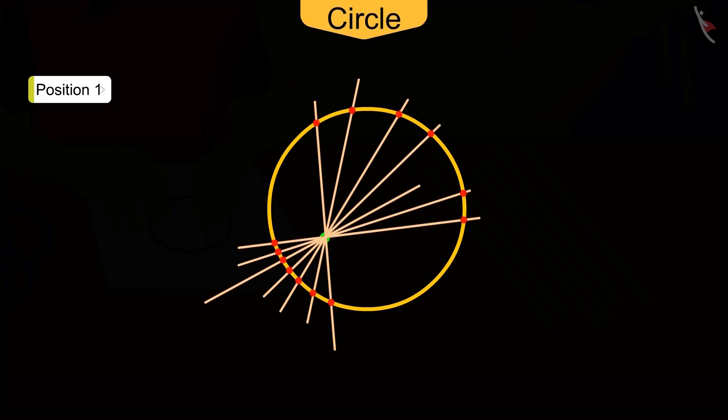That is, no tangent can be drawn from this point on the circle.